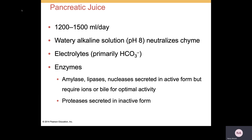The pancreas will also produce a slew of enzymes — amylase, lipases, nucleases — and all of those are going to be secreted in their active form, but you may need bile or ions to make them work optimally. The proteases, however, are going to be secreted in an inactive form so they can't do any damage to proteins in the cell walls.